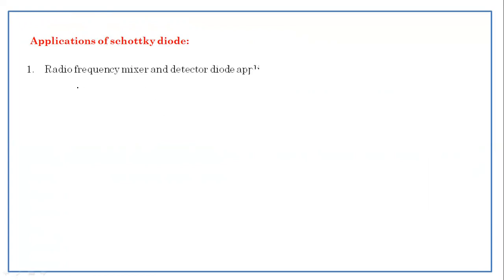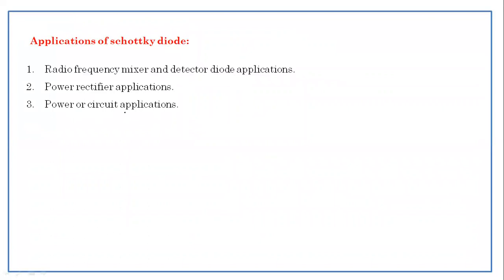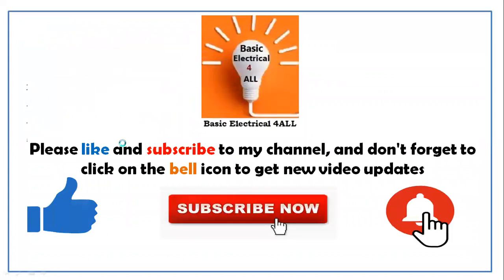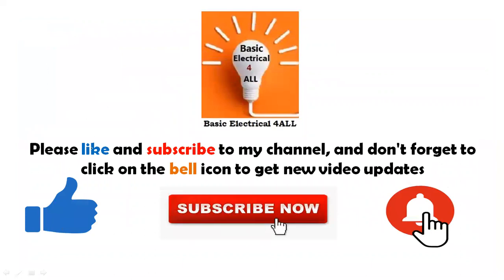The applications of the Schottky diode include: radio frequency mixer and detector diode applications, power rectifier applications, power circuit applications, solar cell applications, and clamp diode applications. This concludes our discussion on the Schottky diode, which is one of the special purpose devices. In the next class, we will discuss another special purpose device — the light emitting diode. Thank you.